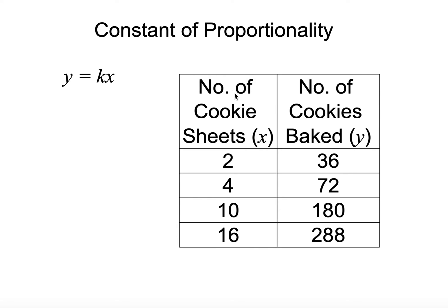Now, here's an example I'd like you to try on your own. We know the number of cookie sheets coming out, and we know the amount of cookies that were baked. We want to find out the constant of proportionality, or the unit rate, or k, of how many cookies are on a sheet. So you can pause the video now, and come back, and we'll figure it out.